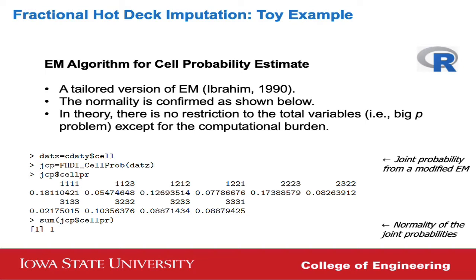We use the modified expectation-maximization scheme for joint cell probability estimation — this method was originally developed by Ibrahim in 1990, and we slightly modified it. For each missing pattern and observation pattern, the categorized cell should have a joint probability. For this toy example, we have 10 unique patterns, each with joint cell probability after the modified EM algorithm, and obviously their sum should be one.